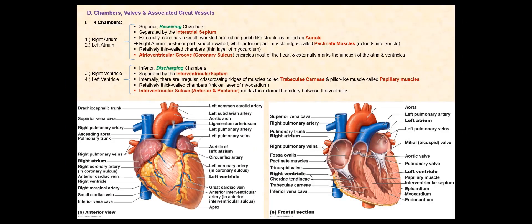We are now going to discuss the chambers, the valves, and the associated great vessels of the heart. We begin with the chambers of the heart. There are four chambers. Therefore, our heart is said to be a four-chambered heart, as are all mammalian hearts.